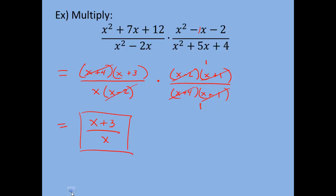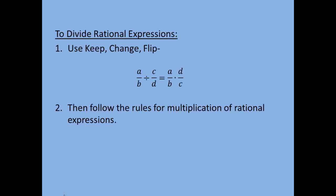Now let's talk about dividing. To divide rational expressions, we use keep-change-flip. When you have a fraction divided by a fraction, you keep the first fraction the same, change the division to multiplication, and flip the last fraction — so d over c becomes c over d. This is the same as multiplying by the reciprocal. Once you've done keep-change-flip, you now have a multiplication problem and follow the rules for multiplication.